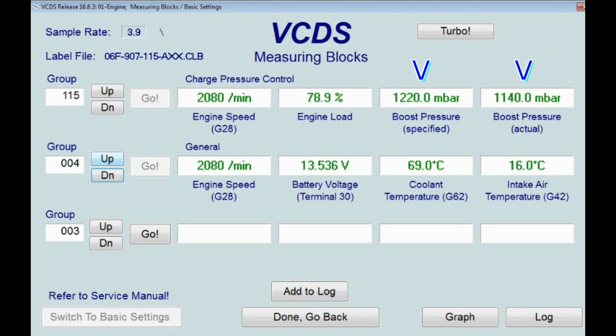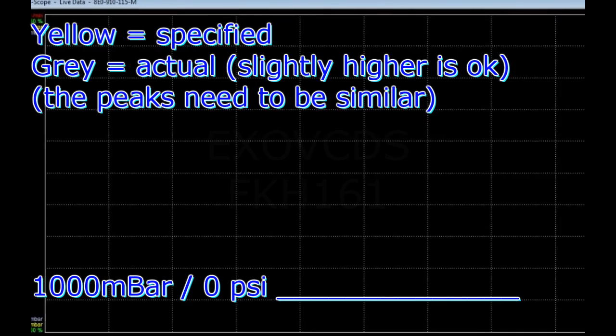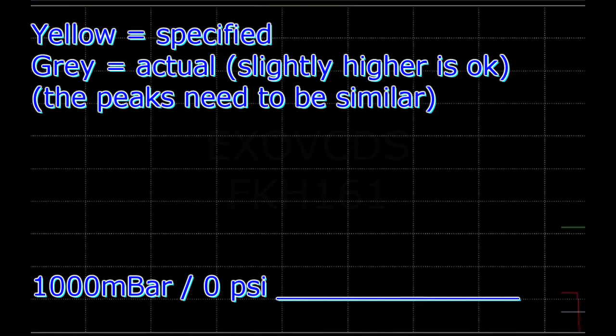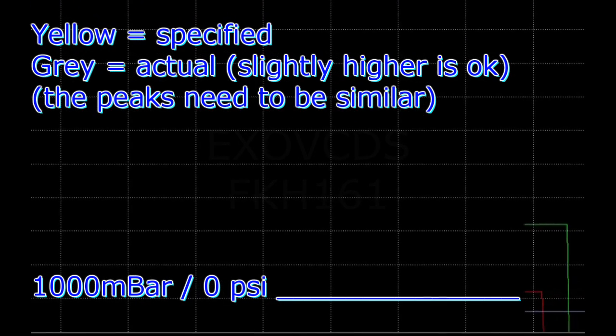So it specified at 1500 and it hit 1500 fairly quickly. The yellow and gray graph is what we're looking for, and it's the peaks we're looking for—the peaks need to be the same.